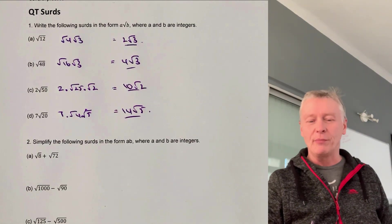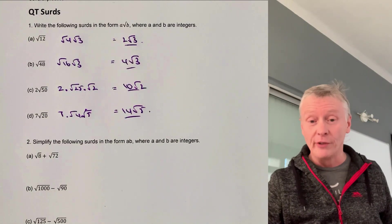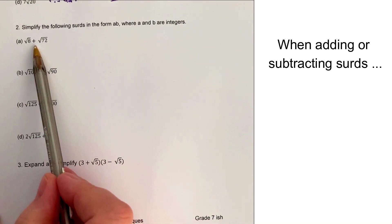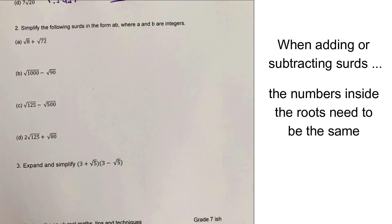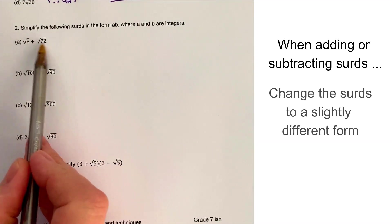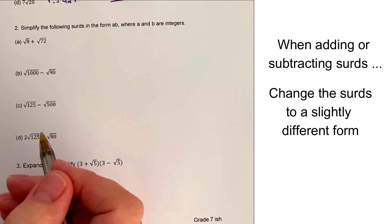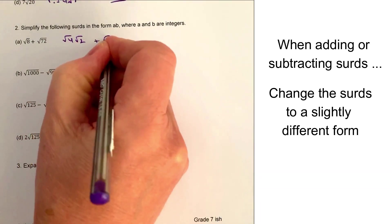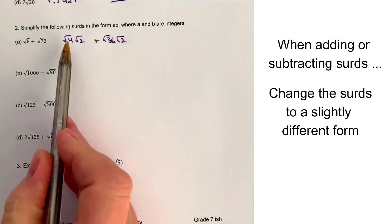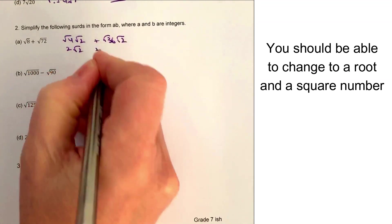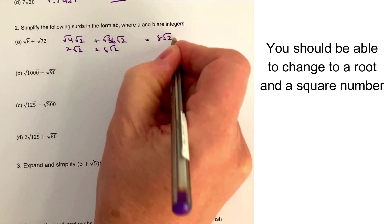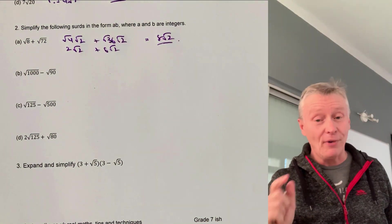Question number 2 gets a little bit trickier, but we're going to use largely the same principle. When adding these surds together, we need to make sure we've got the same base number. So I'm going to change each of these numbers to a base of root 2. Root 8 is the same as root 4 times root 2, and root 72 is the same as root 36 times root 2. The square root of 4 is 2, so that's 2 root 2. The square root of 36 is 6, so that's 6 root 2. So 2 root 2 plus 6 root 2 equals 8 root 2.